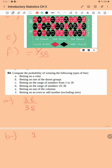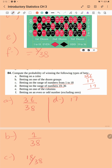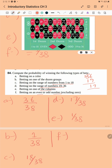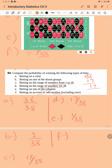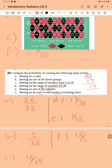Betting on one of the dozen groups — there are two dozen groups — so one group is 12 over 38. Betting on the range of numbers from 1 to 18 gives 18 over 38. Betting on numbers from 19 to 36 gives 18 over 38. Betting on one of the columns is 12 over 38. Betting on even or odd numbers gives 18 over 38.